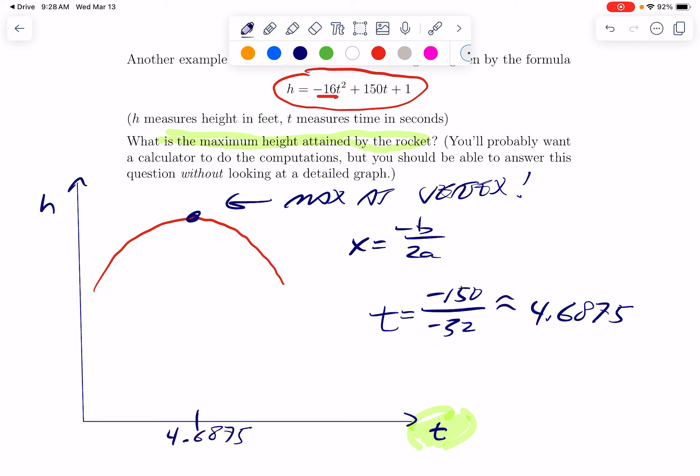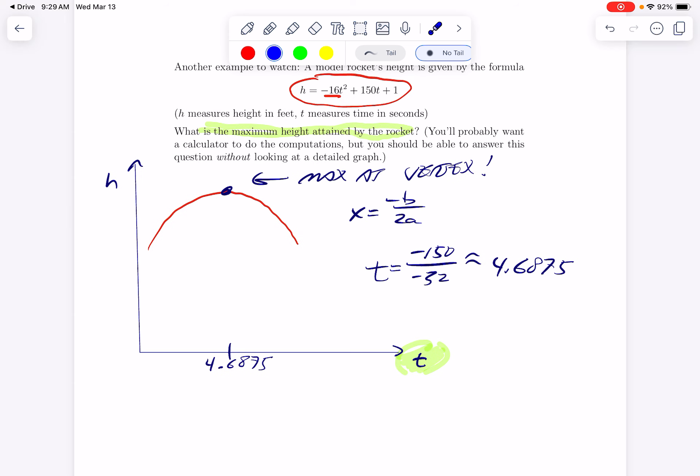So the rocket goes up for four or five seconds. After about four and a half seconds, it is at its maximum height. The question is what is that maximum height? So to find the corresponding height, we'll just use this formula. This tells us height as a function of time.